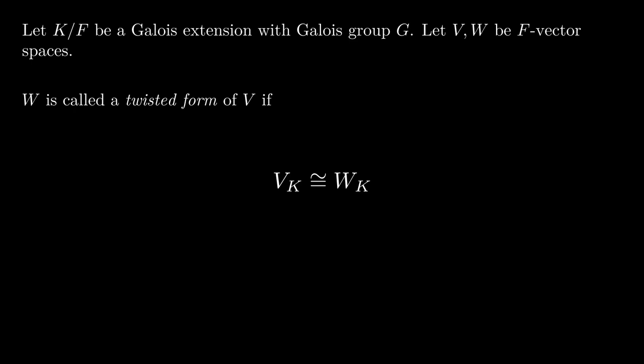As a notational convenience, we'll write V_K instead of V tensor F K. But now an interesting question to ask is sort of the converse. If two F-vector spaces become isomorphic over K by this process of base change, then were they isomorphic as F-vector spaces to begin with?